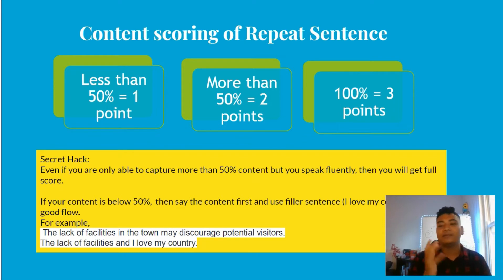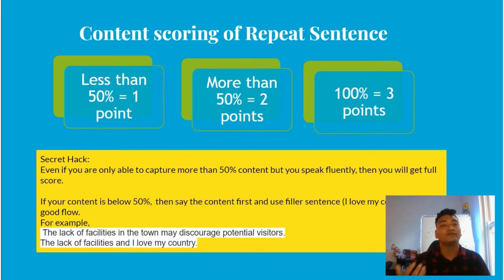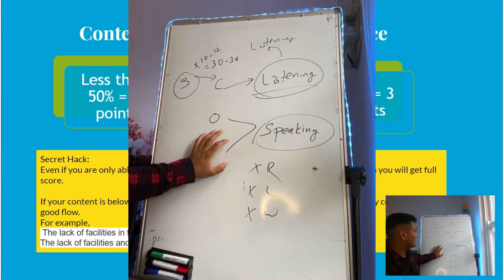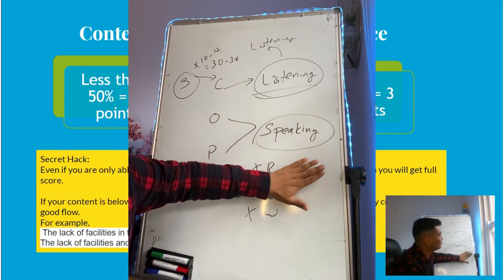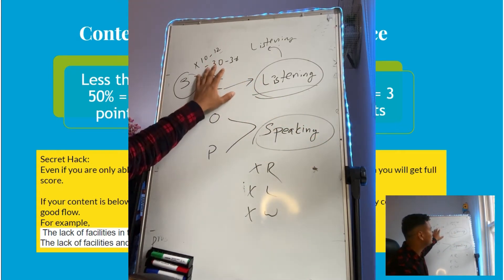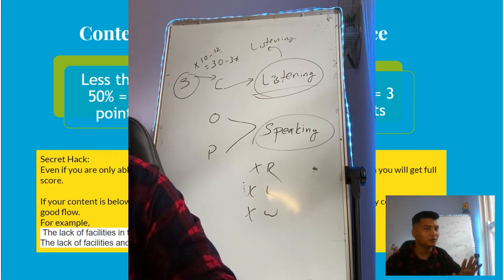For example: 'I love my country' or 'Red is my favorite color.' If the sentence is 'The lack of facilities in this town may discourage potential visitors' and you say 'The lack of facilities and I love my country,' you will still get one point towards your listening and full points towards your speaking. Oral fluency and pronunciation are key — so just focus on the content.